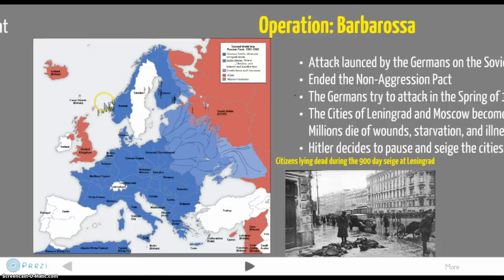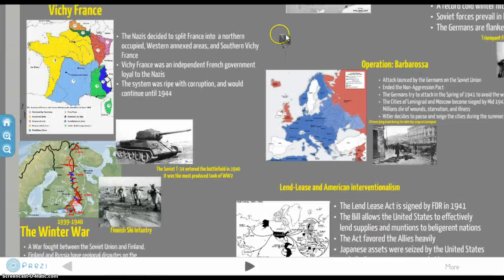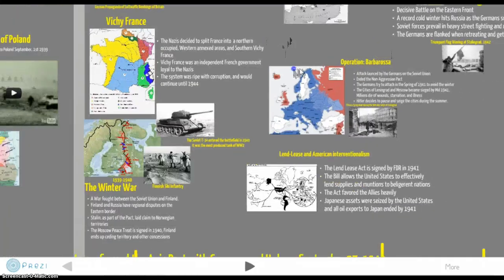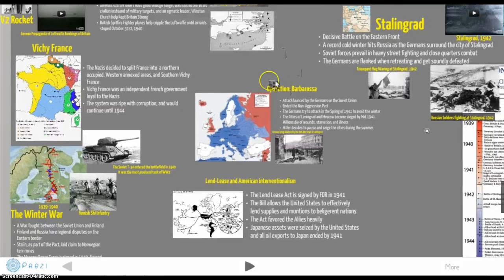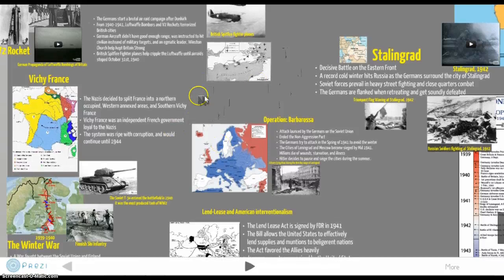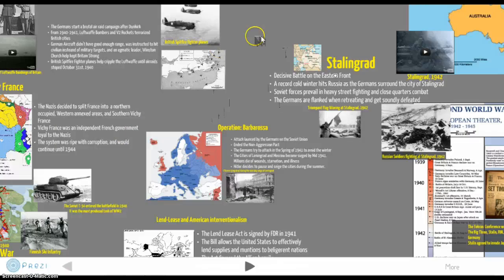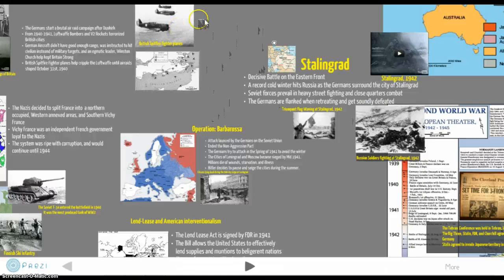Many historians say Hitler's biggest fault was starting a true two-front war: fighting the Soviet Union in the east and the United Kingdom — and later the United States — in the west. That covers the key events of 1941 to 1942. Next time we'll go over the actual campaigns of the war in more detail.